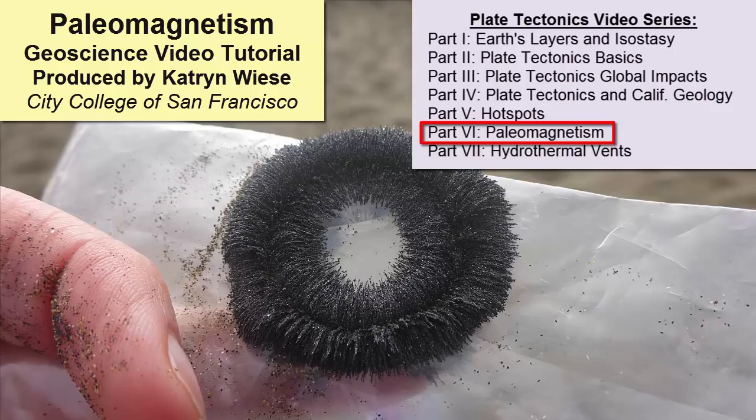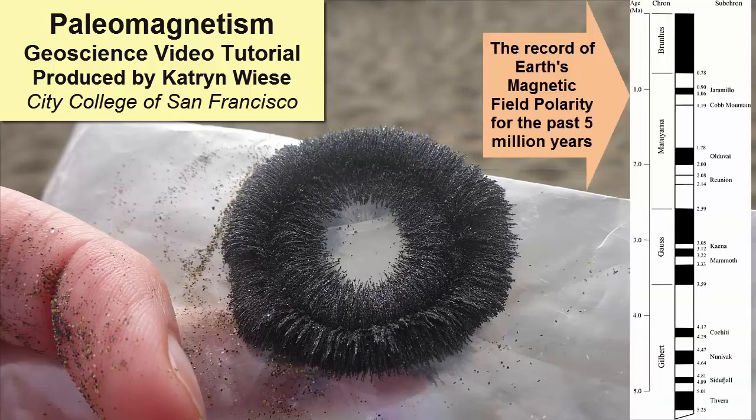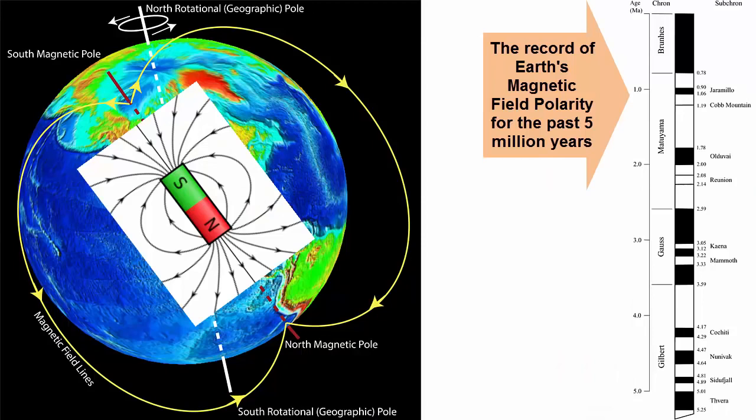The other tool we use to study plate motion and direction is paleomagnetism, or the record of ancient magnetism recorded in the rocks. To understand how, we first have to review how Earth's magnetic field is produced.